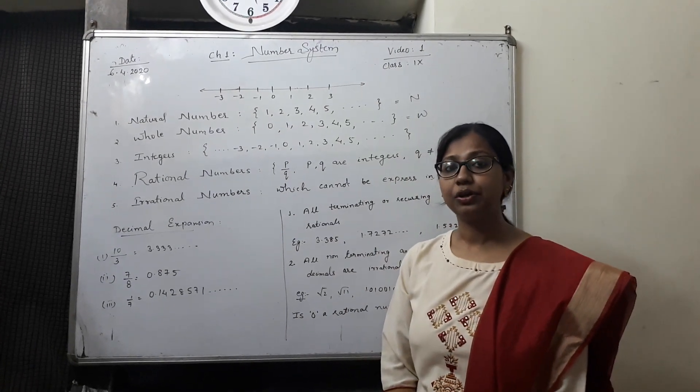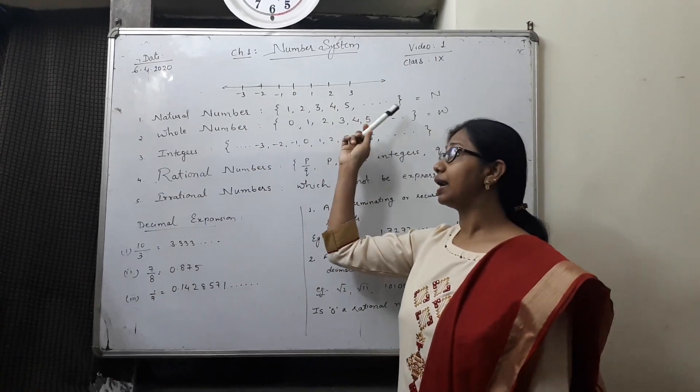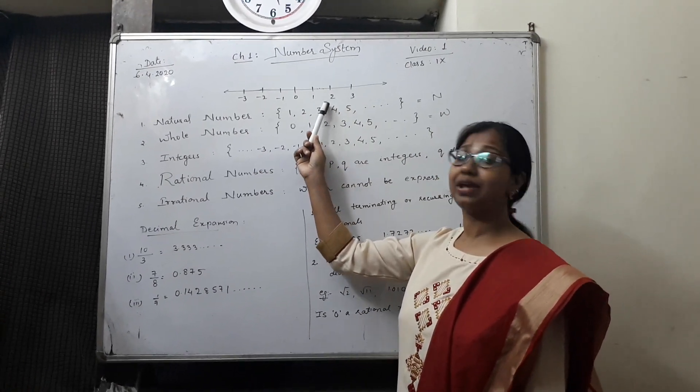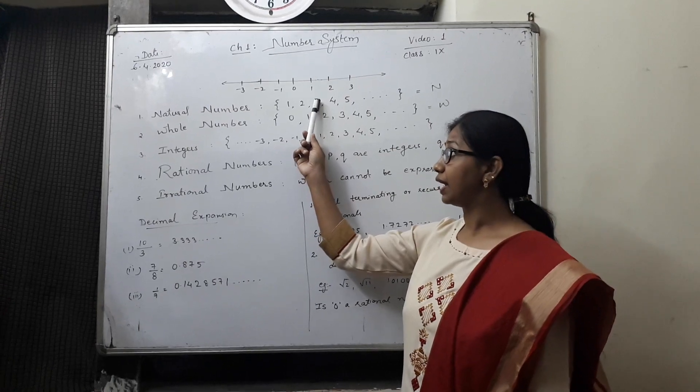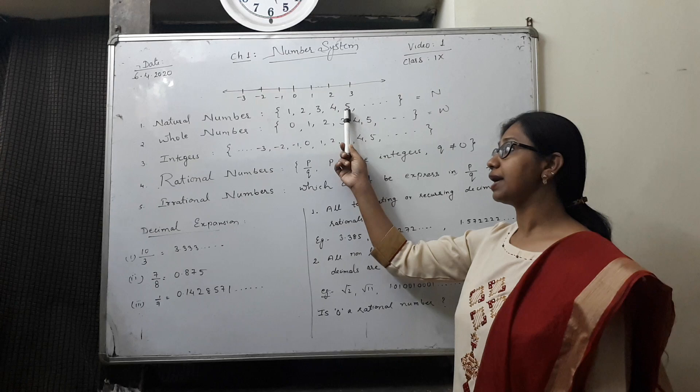In your previous class, you might have done the number represented on a number line. You have represented various numbers on a number line. The numbers which is 1, 2, 3, 4, 5.